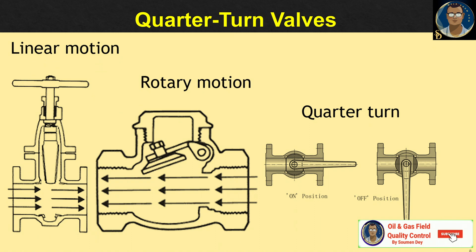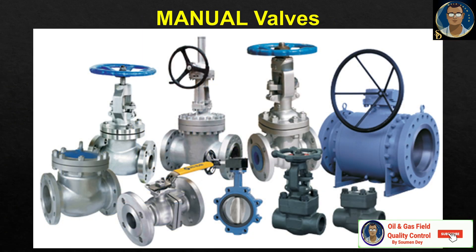Quarter turn valves are those types of valve which offer a complete range of motion in a 90-degree turn of the handle. With a 90-degree turn the valve closes, and 90 degrees back opens the valve. Manual valves, as the name suggests, are mostly adjusted by hand. These are valves with large hand wheels, hand levers, gear wheels or chains to actuate.